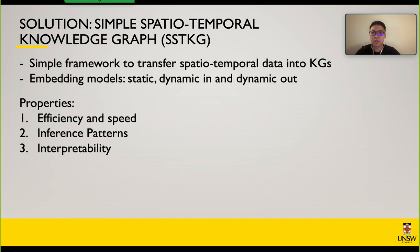We use a simple framework to transfer spatial-temporal data into knowledge graphs, then categorize embedded models into three boxes: static, dynamic-in, and dynamic-out, to reflect entities' changing attributes and relations. Our model is designed with computational efficiency in mind, and the embeddings have inference patterns that are effectively used in tasks like cell predicting and traffic forecasting.